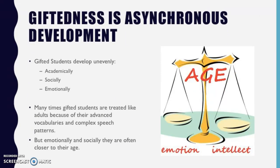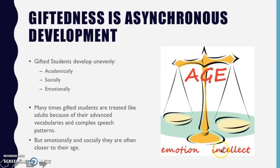Giftedness is asynchronous development. Gifted students develop unevenly across academics, socially, and emotionally. There's a scale shown here, and it shows how sometimes this unevenness causes conflict because they're not on the same page academically as they are socially — they may be a bit behind in their social skills. This causes conflicts in making peer relationships with teachers, students, and others.